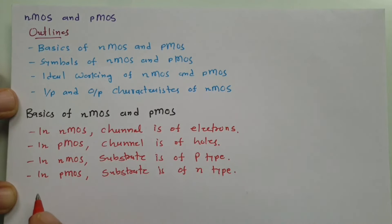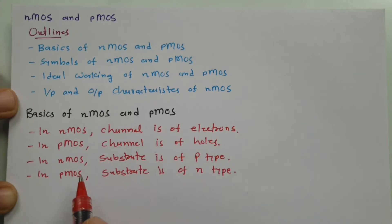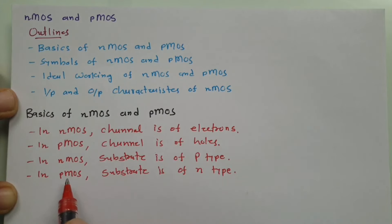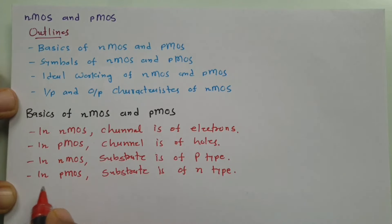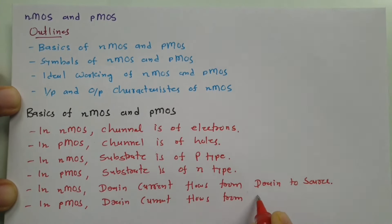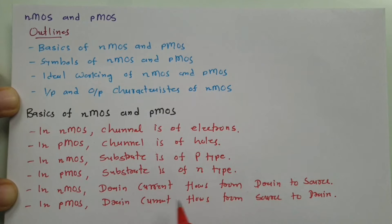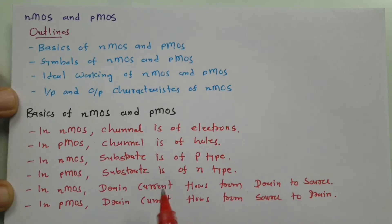When we talk about operation: in NMOS, the drain current flows from drain to source, while in PMOS, the drain current flows from source to drain. These are the basics that one should know regarding NMOS and PMOS.